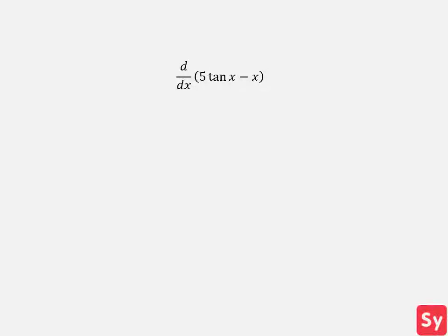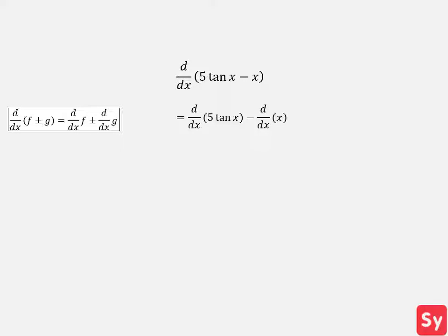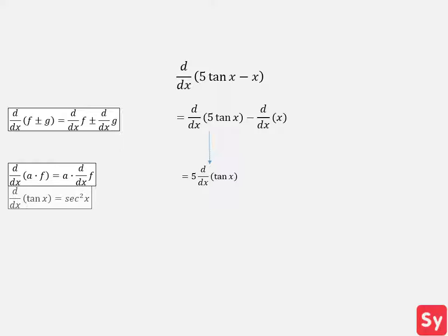Last example, we want to compute the derivative of 5 times tangent of x minus x. We first use the sum difference rule to split the derivative into two. We will first compute the derivative of 5 times tangent of x — we use the multiplication by a constant rule and pull out a 5. Next we recall the derivative of tangent of x, which equals secant squared of x, and plug that in. This gives us 5 times secant squared of x.